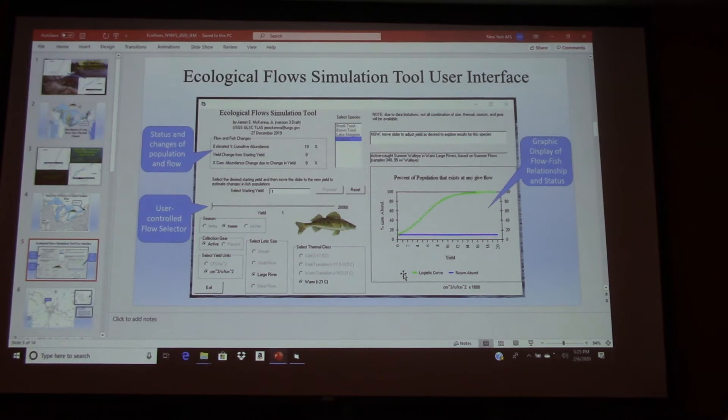The box in the upper left underneath the title gives you a summary of the proportion of all possible walleye that could be supported that is being supported by that given yield. And then what the change is in the yield and what the change is in the fish.